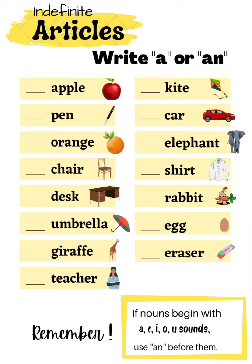What are articles? The words 'a' or 'an' and 'the' are called articles. Articles come before nouns. The article 'a' or 'an' is called the indefinite article because it doesn't state which person or thing we are talking about.